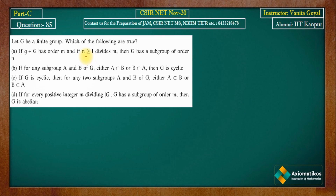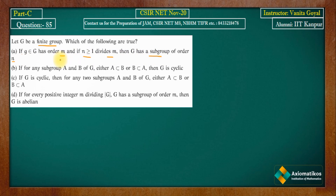Hello everyone, welcome to the solution series for CSIR NET November 2020. This is Question 85 from Part C. Let G be a finite group. Option A states: if an element g from G has order m, and n ≥ 1 divides m, then G has a subgroup of order n.